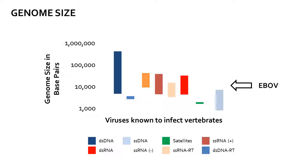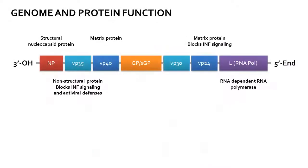The size of the Zaire Ebola virus genome is near the bottom range of single-stranded negative sense RNA viruses at approximately 18 to 19 kilobase pairs. However, multiple splice variants create the potential for a relatively diverse proteome, which is afforded additional complexity by the ability to form multimeric protein complexes in various spatial organizations.